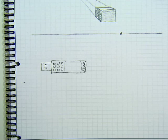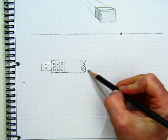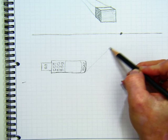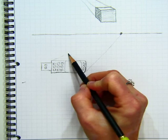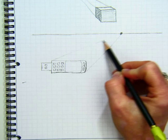And now to get it in one point perspective, I'm going to draw construction lines from the corners of my object, or the edges, to my vanishing point.